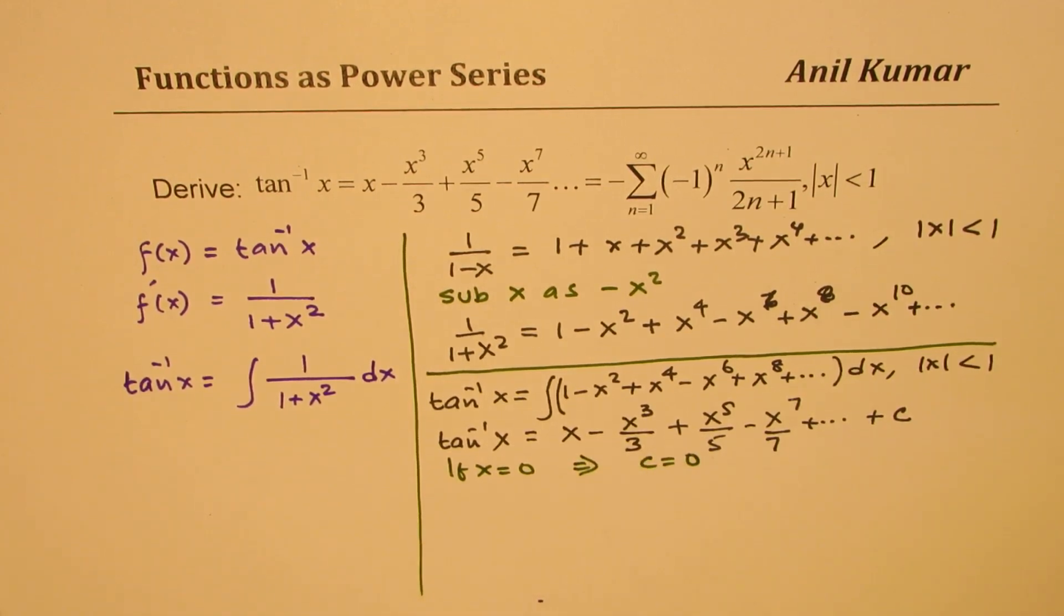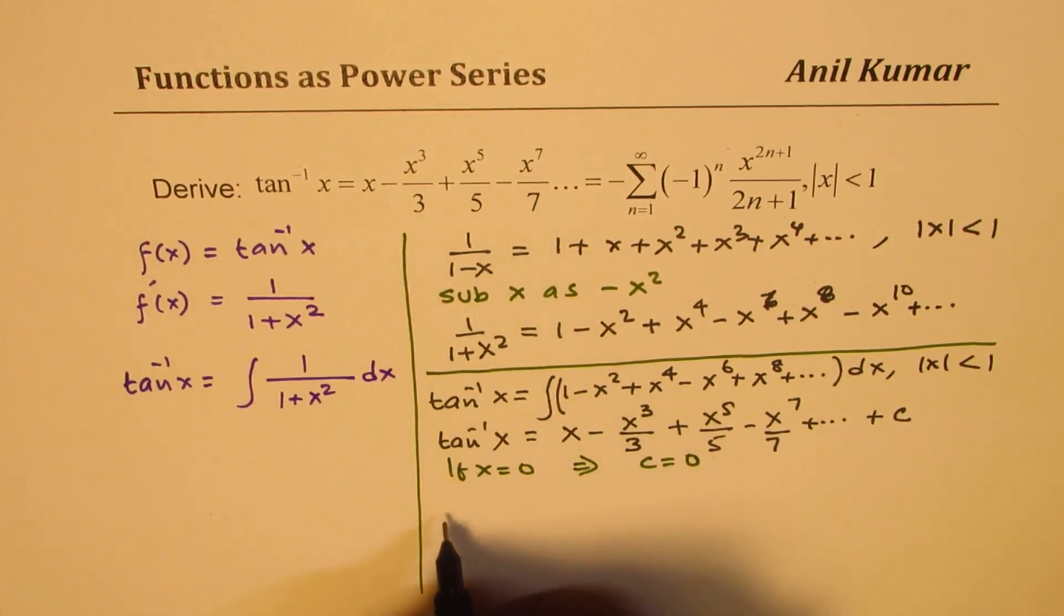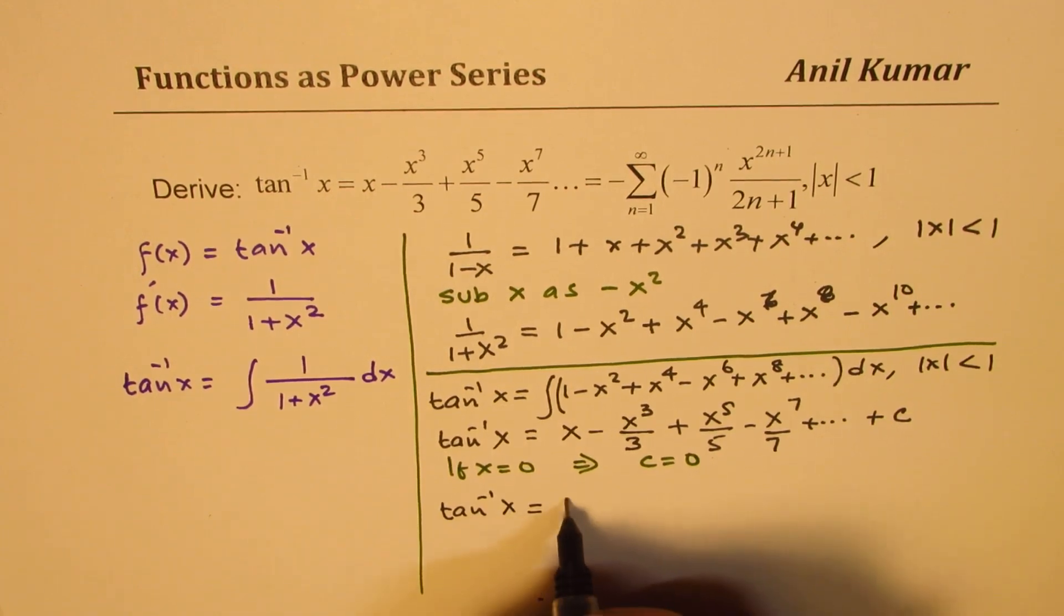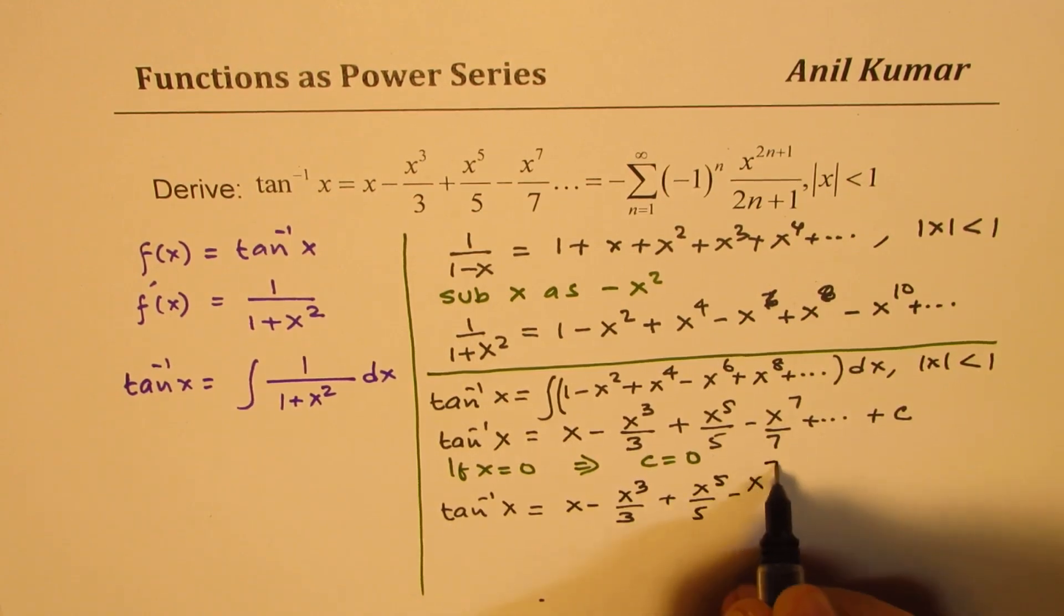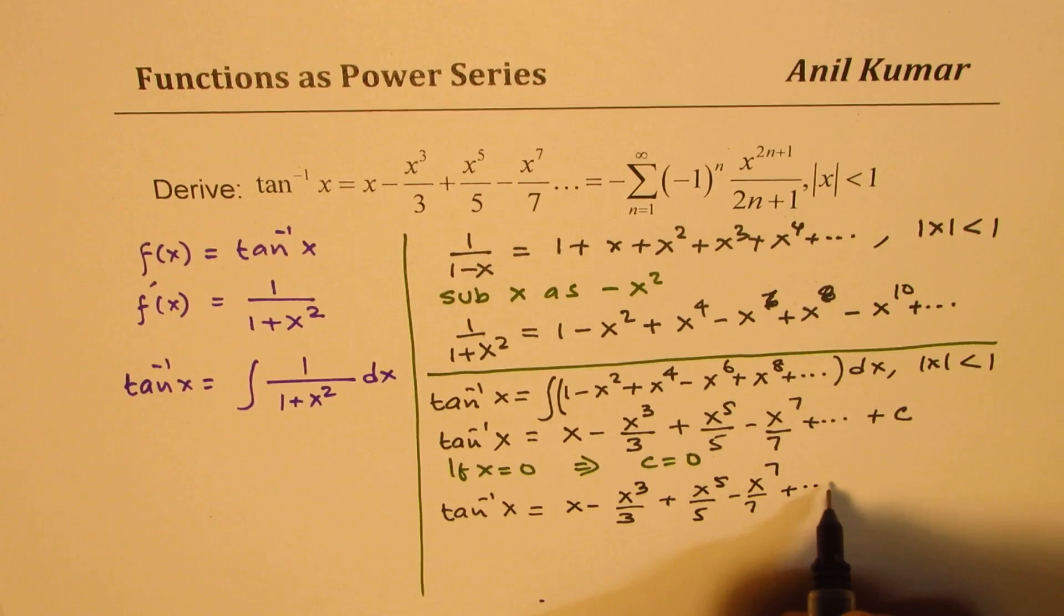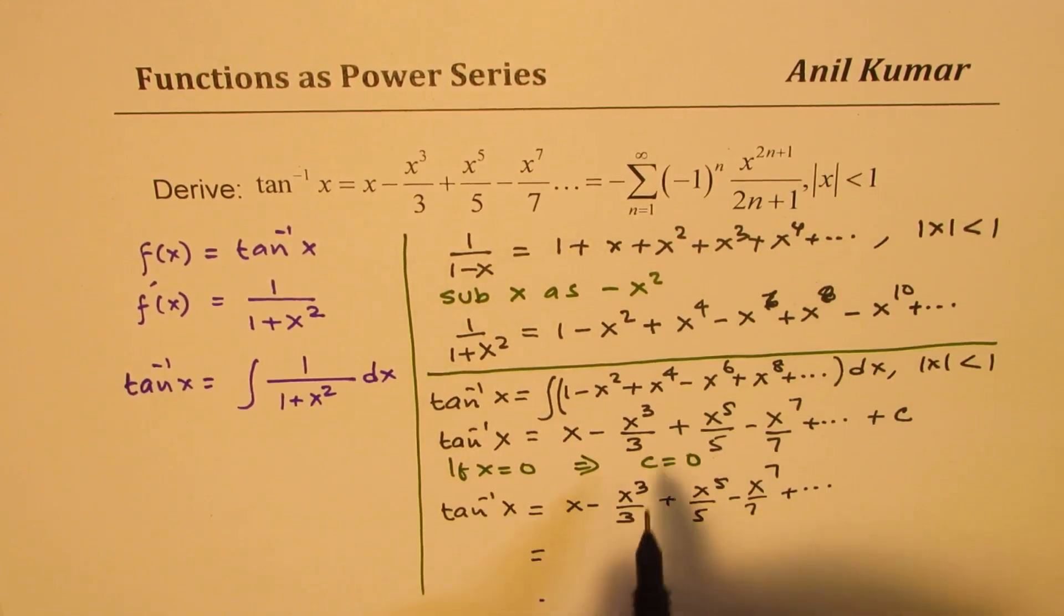Therefore I could now write the formula, which is tan inverse x as equal to x minus x cubed over three plus x to the power of five over five minus x to the power of seven over seven plus so on.